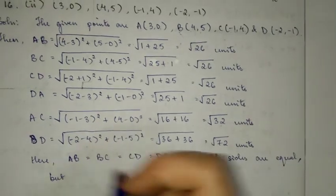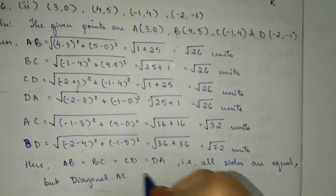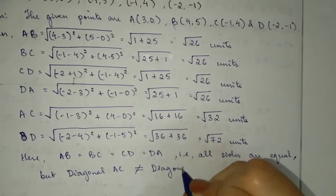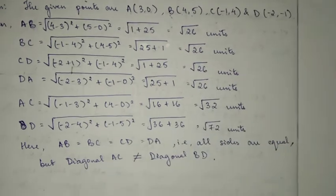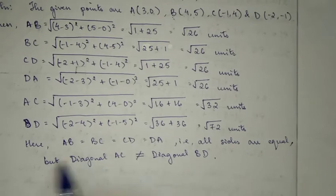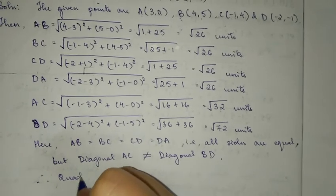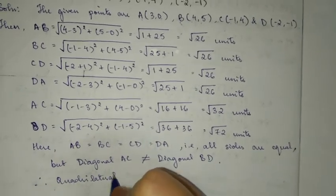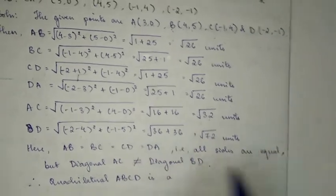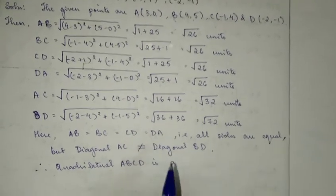All sides are equal, but diagonal AC is not equal to diagonal BD. The diagonals are not equal. The sides are equal but the diagonals are not equal. This is a rhombus. Okay, therefore quadrilateral ABCD is a rhombus. The sides are equal but the diagonals are not equal, so it is a rhombus.